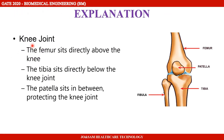The knee joint is formed by bones coming together. The femur bone is above the knee, and the tibia is below the knee. The patella is the kneecap, and this kneecap is attached to the femur.